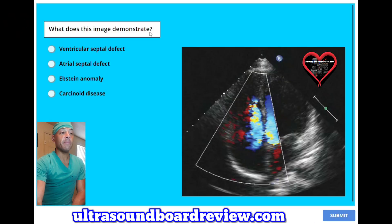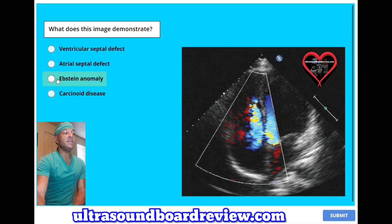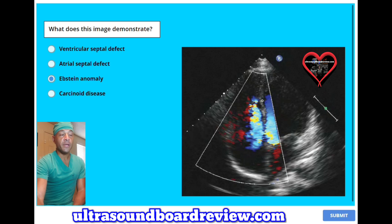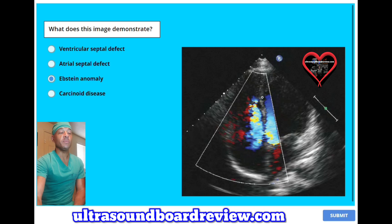What does this image demonstrate? A, ventricular septal defect; B, atrial septal defect; C, Ebstein anomaly; or D, carcinoid disease? The answer is C, Ebstein anomaly. This right here is tricuspid regurgitation and the tricuspid valve is way up here. In Ebstein anomaly, your ventricle becomes atrialized and your tricuspid valve will be displaced inferiorly in the right ventricle.